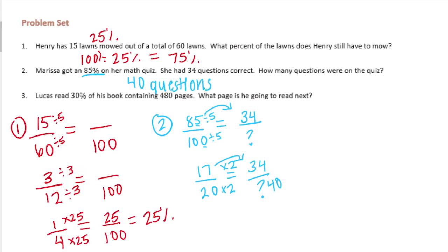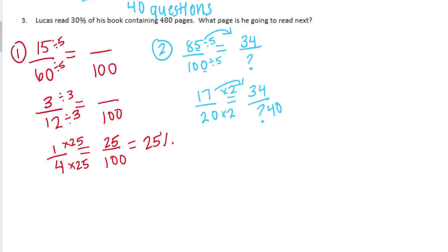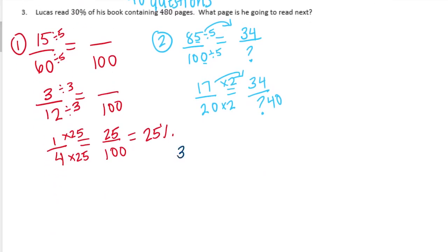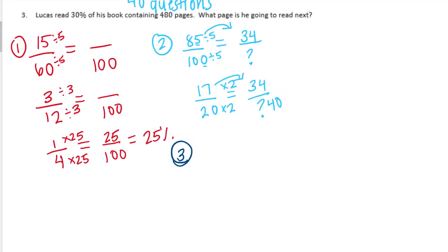And then the last one, number 3. Lucas read 30 percent of his book containing 480 pages. What page is he going to read next? So he's read 30 percent, 30 out of 100. And then the book has a total number of 480 pages. So we want to know how many pages he's read and then what page he's going to read next.